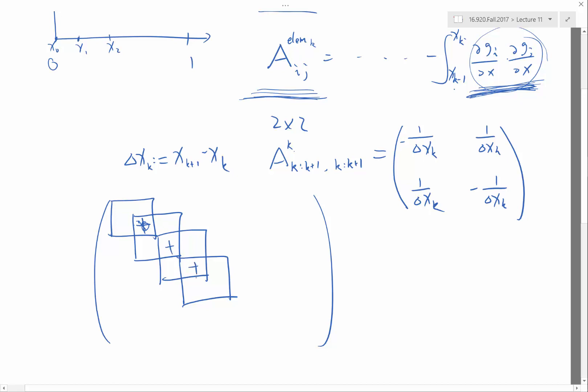This is why the diagonal becomes, in general, larger magnitude than the off diagonals. If all the elements are uniform, if all the delta x_k's are the same, then you get a factor of 2 over here.